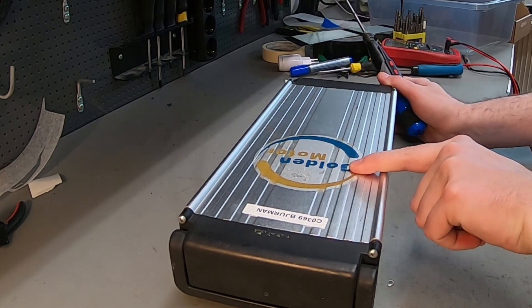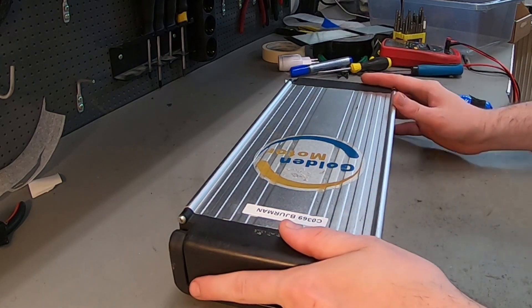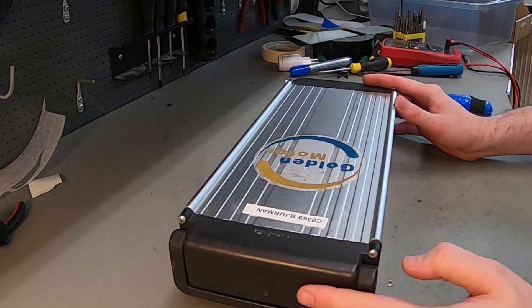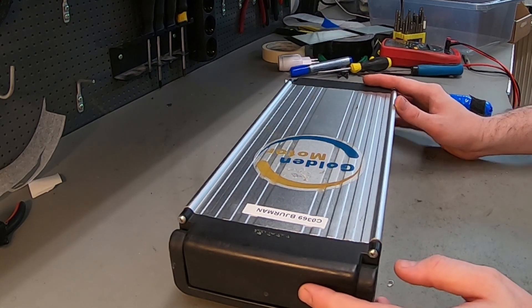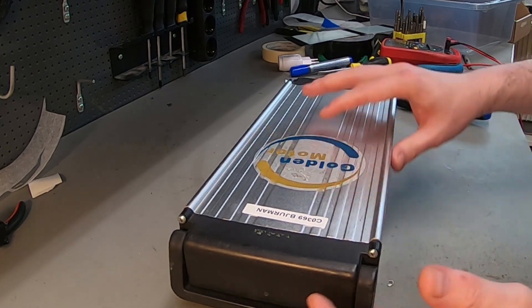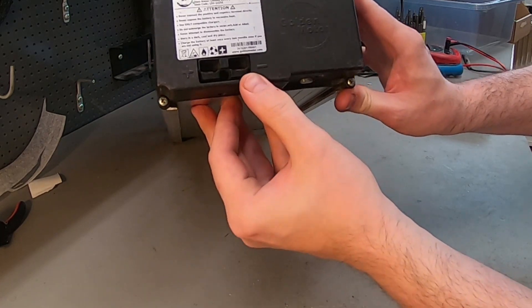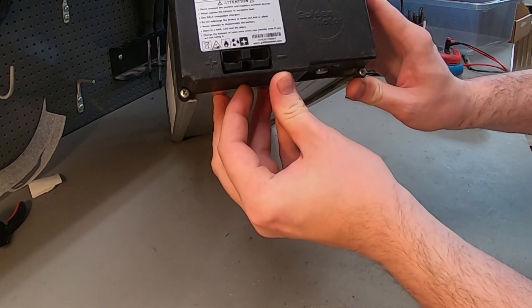Here we have a Golden Motor battery. It's not every day we get them in. They sell e-bike kits from China and also batteries. They usually come in this kind of case, this is the larger version with a really large Anderson connector.